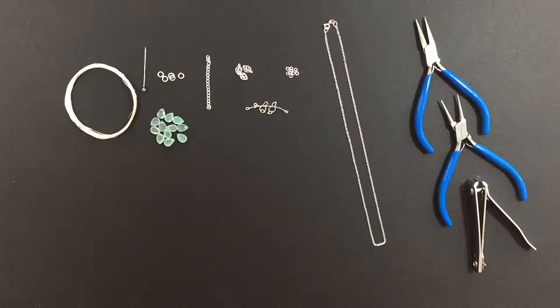We'll also need 26 gauge dead soft sterling silver wire, a 16 inch fine cable oval Italian sterling silver chain, a 2 inch extender, 22 gauge 3mm jump rings, and an 18 gauge 5mm jump ring.